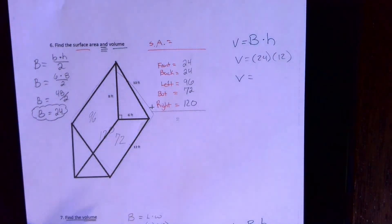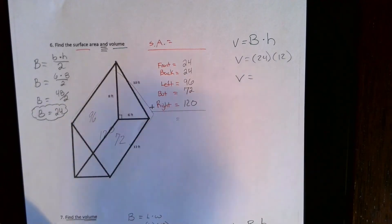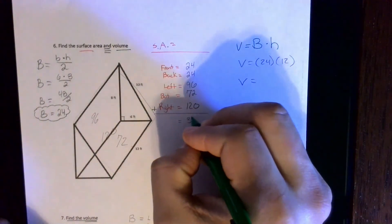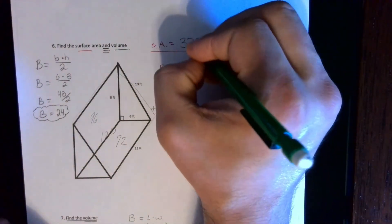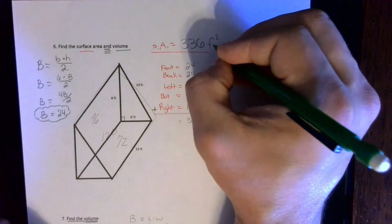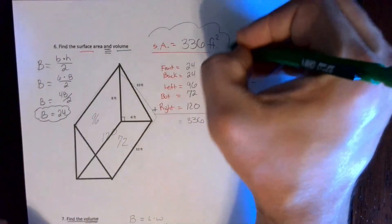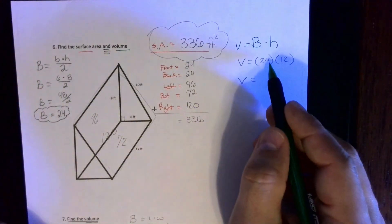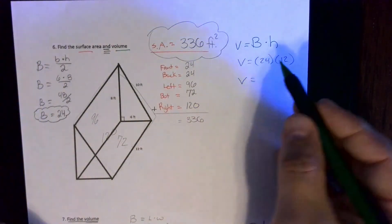Take the five sides and add them up. I did some quick adding right here. When you add those up, you get a total of 336 square feet.